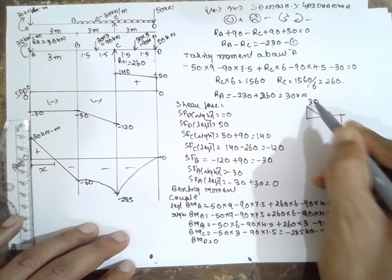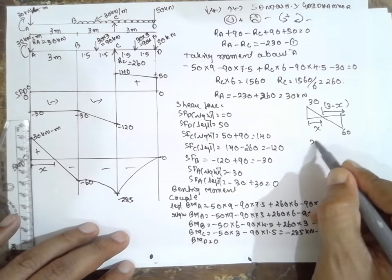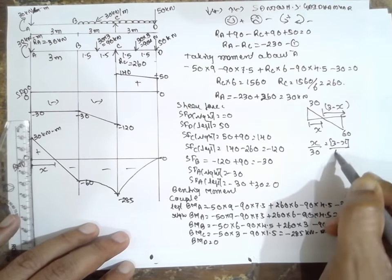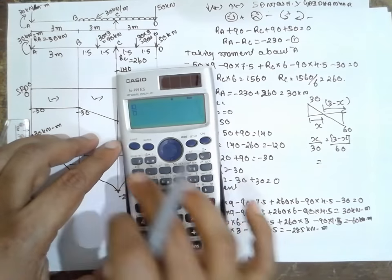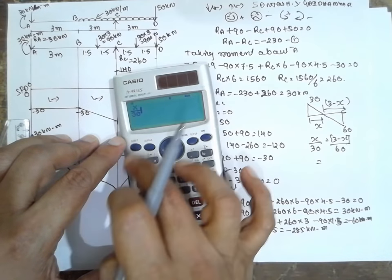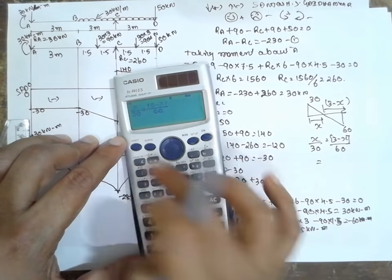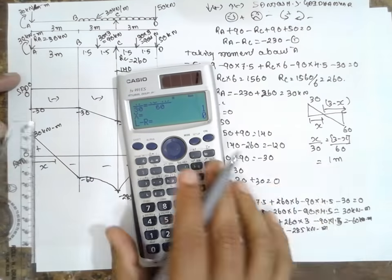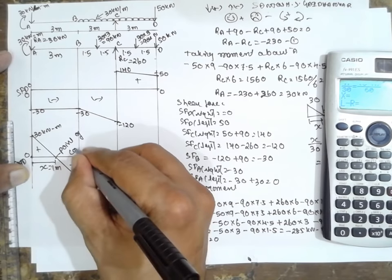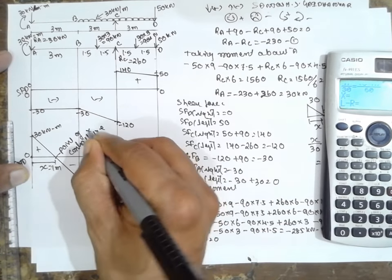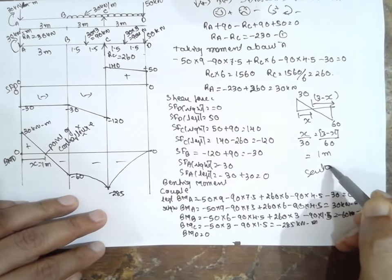Using similar triangles: X divided by 30 equals 3 minus X divided by 60. Solving this gives X equals 1 meter. This is the point of contraflexure. In this way you solve the problem of an overhanging beam with a couple and UDL. I am Satosh Gaidankar. Thank you very much.